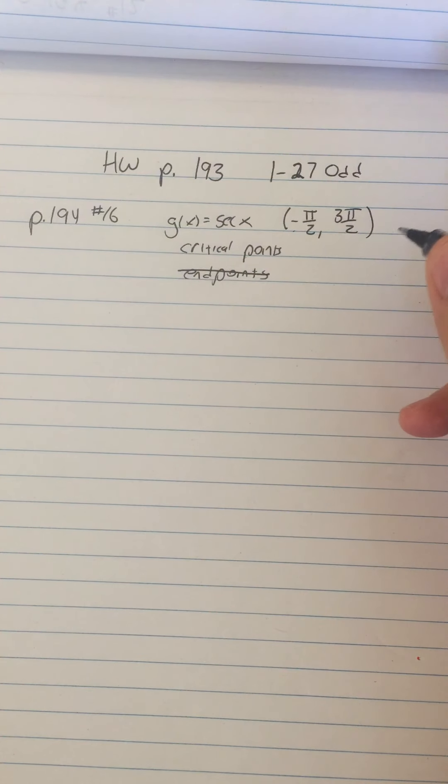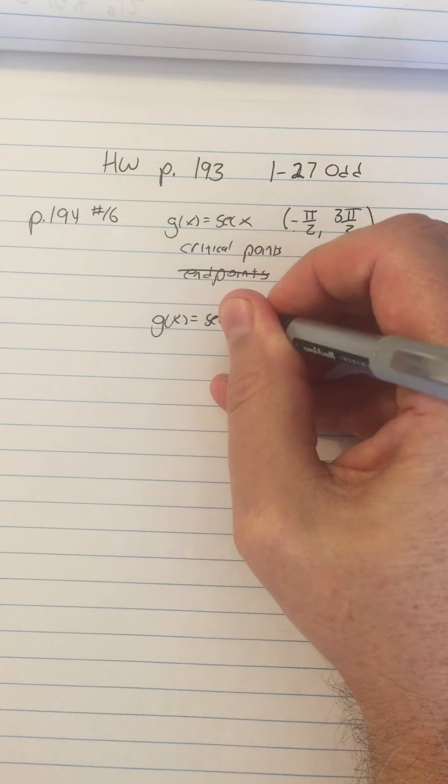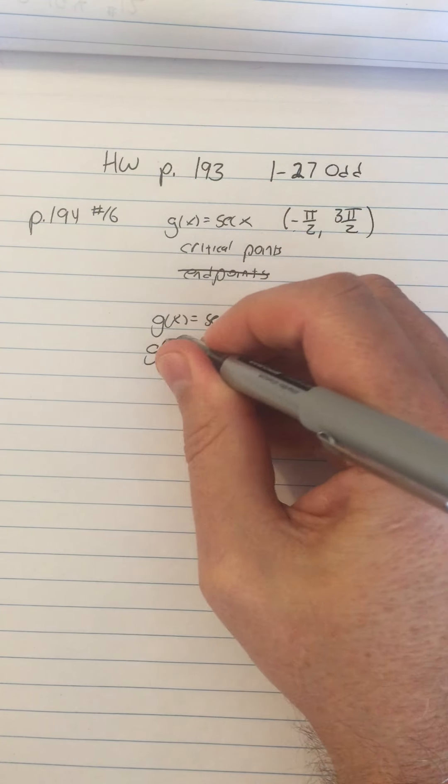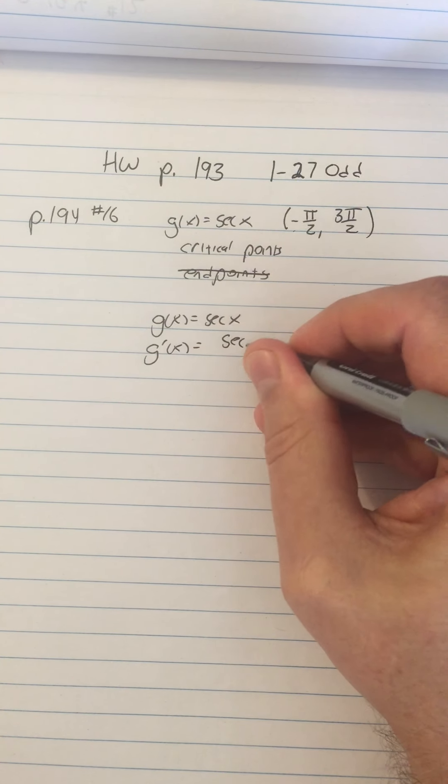We know that g of x equals secant x, so to find the critical points we need g prime of x, which is secant tangent.